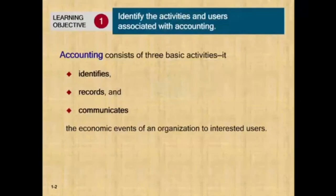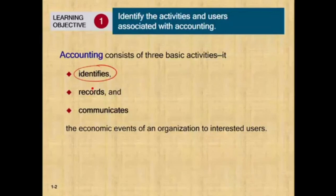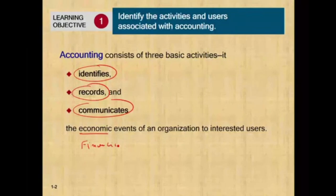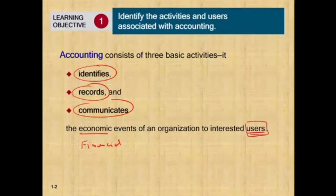What is accounting? Accounting basically consists of three basic activities: it identifies, records, and communicates economic — or financial — information of an organization to interested users. We're also going to be looking at who those users are, because someone is interested in this information.